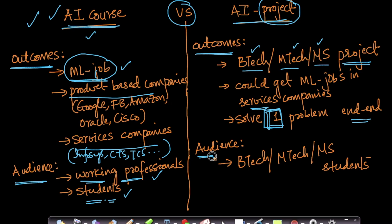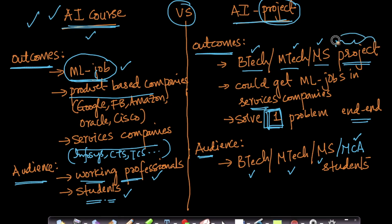The audience for the AI project is BTECH, MTECH, and MS students — including Master of Computer Applications students. Students pursuing their bachelor's or master's degrees in computer science or related fields will find doing an AI project very ideal. The outcome here is to perform your final year project in AI, while the outcome of the AI course is to land a machine learning job.